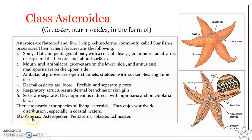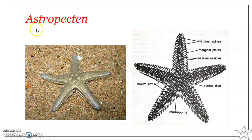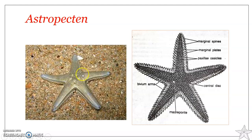Common examples of asteroids include Asterias, Astropecten, Pentaceros, Solaster, and Echinaster. Here we will be learning about Astropecten. It is a common starfish and a solitary animal, usually found as a single individual. They inhabit the sea from below the tide mark to greater depths. It is a sluggish form, usually found creeping very slowly on the sea bottom.